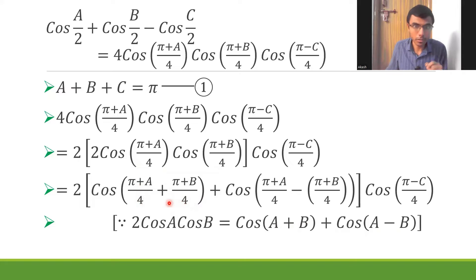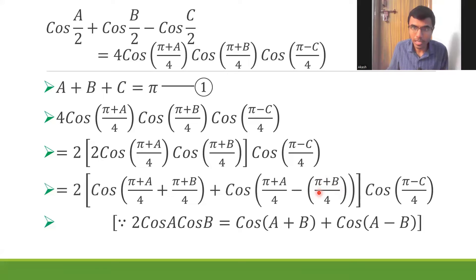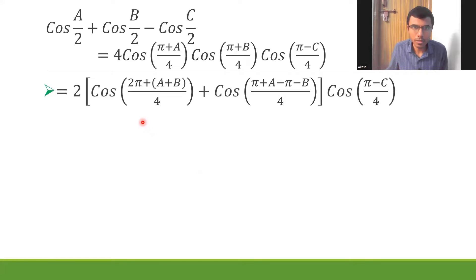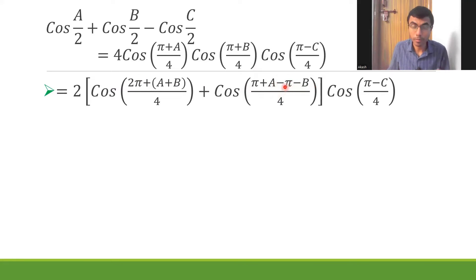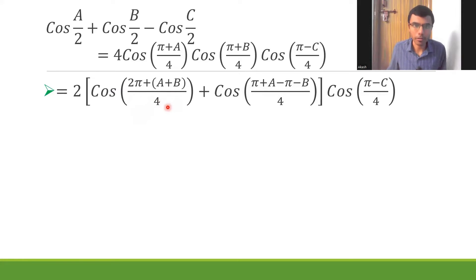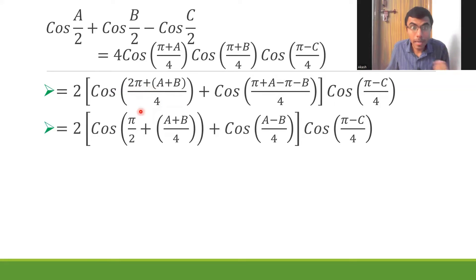The denominator is common for both terms, so (π+a/4) + (π+b/4) = (2π + a+b)/4. The minus gets multiplied to both terms: minus π minus b. So π and minus π cancel, leaving cos(a-b)/4. Splitting the 4 gives (2π/4) + (a+b)/4 = π/2 + (a+b)/4.